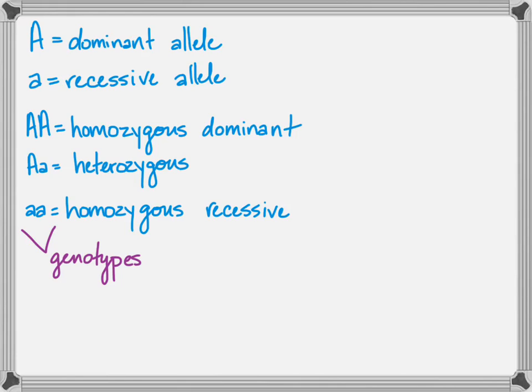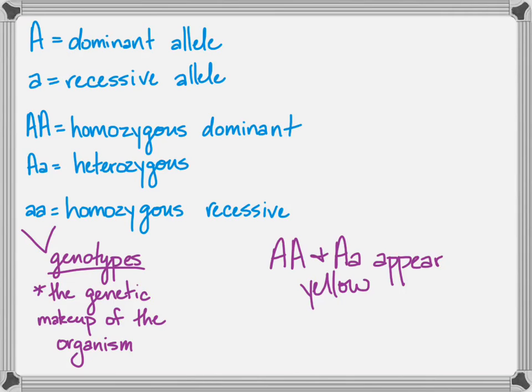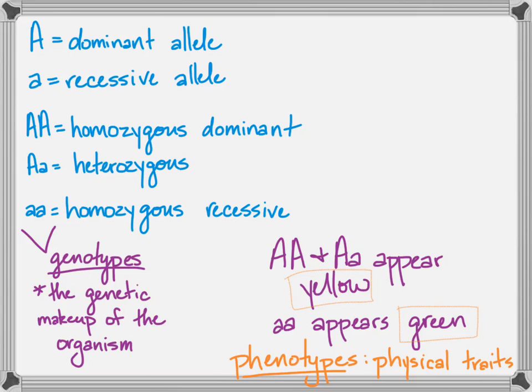These are known as their genotypes. Genotypes are the genetic makeup of the organism. Mendel didn't know there were genes and yet he was already figuring out that there was some factor and individuals got two of them from their parents. What he could see was the phenotype that the two dominant containing sets, so the homozygous dominant and heterozygous genotypes appeared yellow and the homozygous recessive appeared green or short and that was phenotype, the physical traits of the organism.